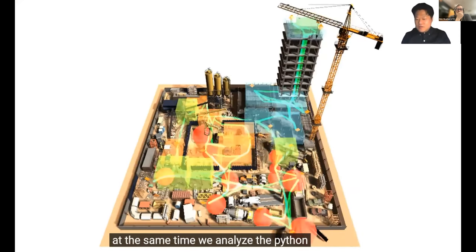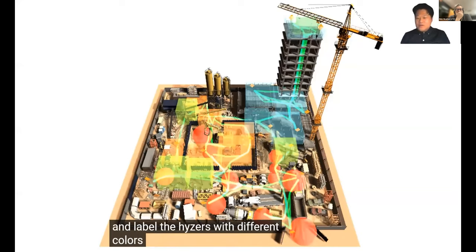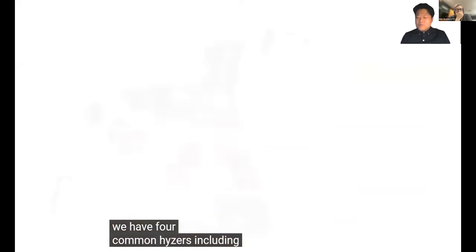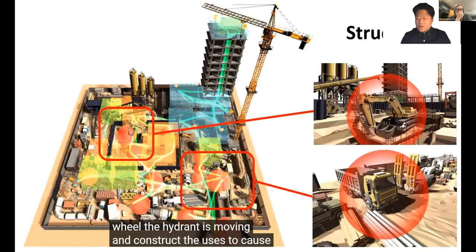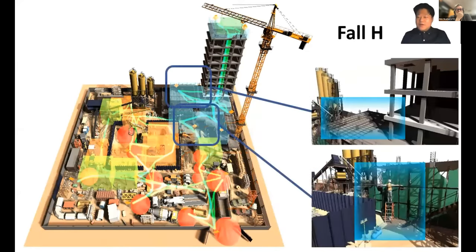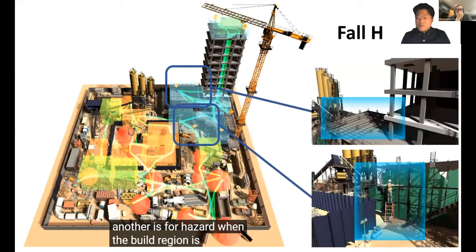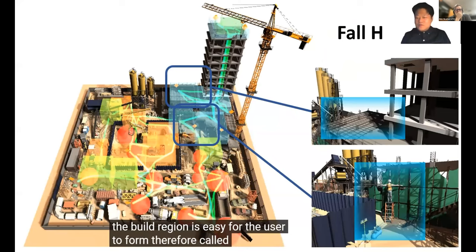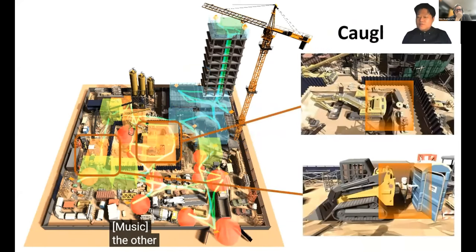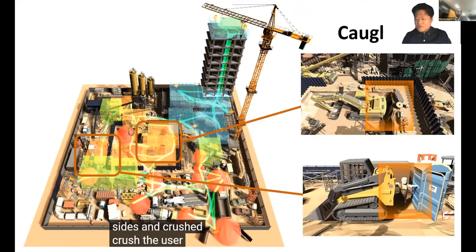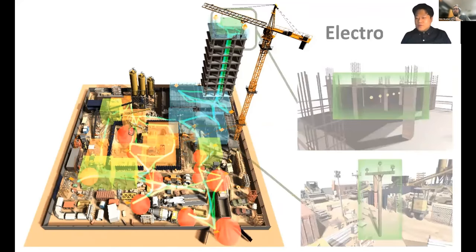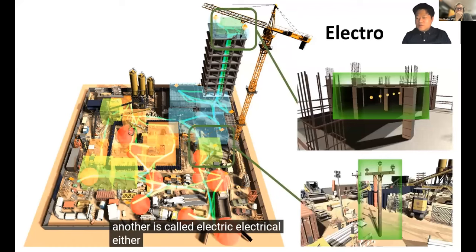At the same time, we analyze the hazards in the scene and label them with different colors. We have four common hazards: the struck-by hazard, where a moving hazard can strike users; fall hazard, where a region is easy for users to fall from; the caught-in hazard, also called caught-in-between hazard, where hazards come from two sides and crush users in between; and electrical hazard, where a region can cause electrocution.